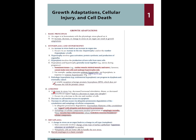Atrophy: A decrease in stress — for example, decreased hormonal stimulation, disuse, or decreased nutrients or blood supply — leads to decrease in organ size. Decrease in cell number occurs via apoptosis. Decrease in cell size occurs via ubiquitin protease degradation of the cytoskeleton and autophagy of cellular components. In ubiquitin protease degradation, intermediate filaments of the cytoskeleton are tagged with ubiquitin and destroyed by proteasomes. Autophagy of cellular components involves generation of autophagic vacuoles, which fuse with lysosomes whose hydrolytic enzymes break down cellular components.